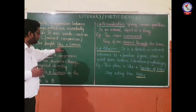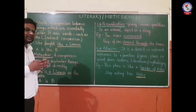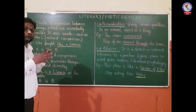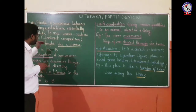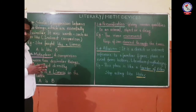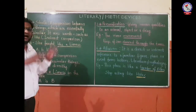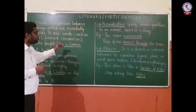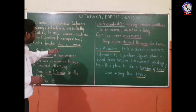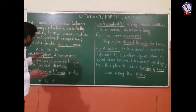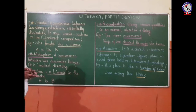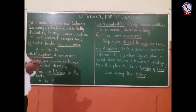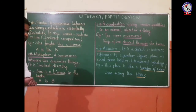See the example: 'She fought like a lion.' Here, the word 'like' is used. In this line, simile is used to compare two things — her bravery and courage is compared to a lion's using the word 'like.' So here, A is like B — comparison is done using the word 'like'.